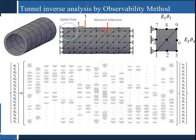To better understand the observability method (OM), I will explain it with an example of a real structure. In this picture, we have a real tunnel, and on the right-hand side, we have the discretization of the tunnel. I will derive only two elements with different material properties: E1, NU1 and E2, NU2.